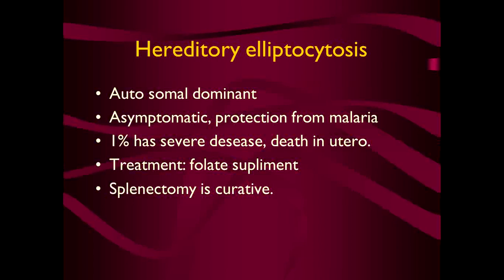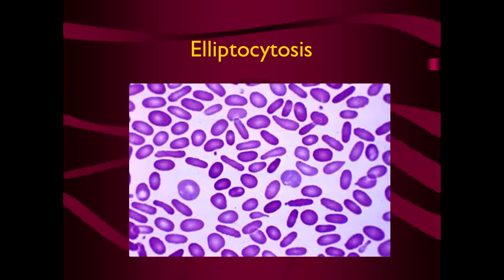Hereditary elliptocytosis is also an autosomal dominant disorder. The patient is usually asymptomatic, but fortunately these patients have protection from malaria. One percent have severe disease and may die in utero. Treatment is folate supplements; splenectomy is sometimes required but is curative. These are the elliptocytes, which also have poor capability of sailing through capillaries and are finally destroyed in the spleen.